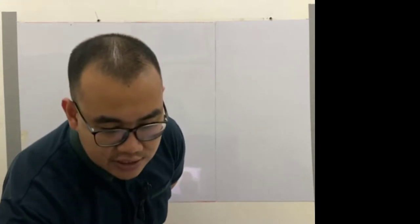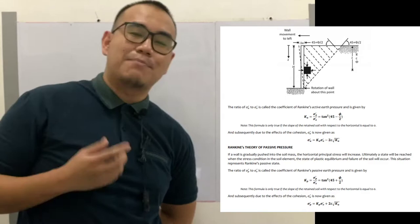We will now consider the two other cases of lateral earth pressure. We have already finished lateral earth pressure at rest, so let's consider the other two cases: active and passive earth pressure. These theories were studied by geotechnical engineer Rankine. The main difference we'll look at is what happens when considering active and passive pressure versus at-rest conditions.